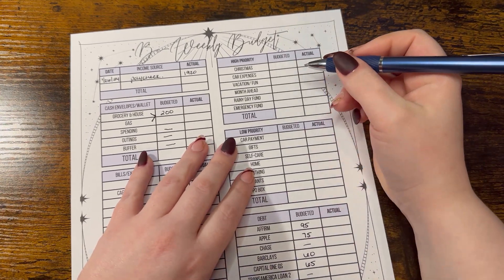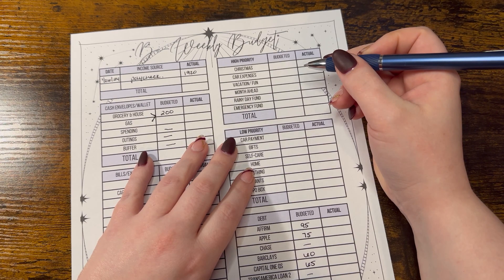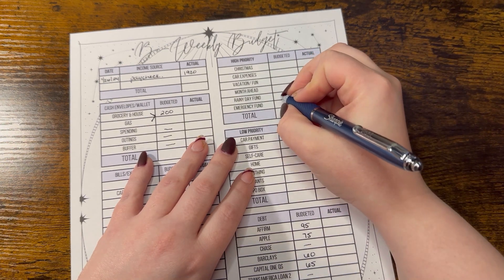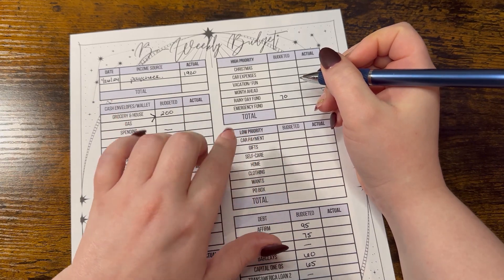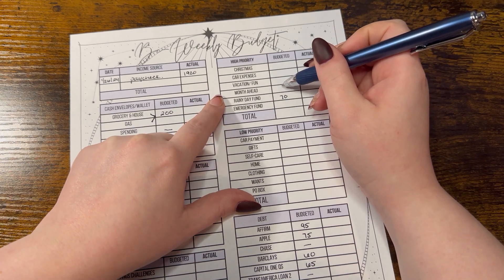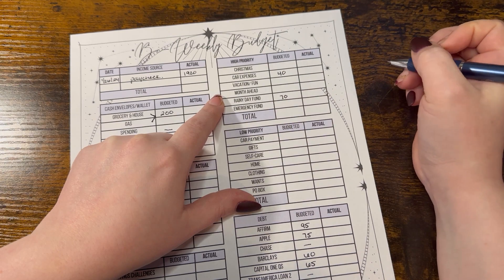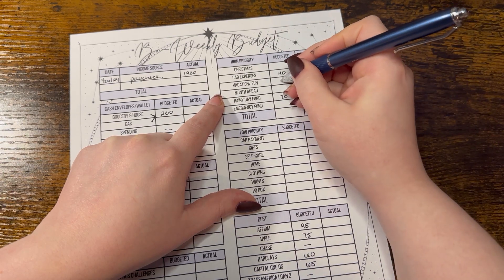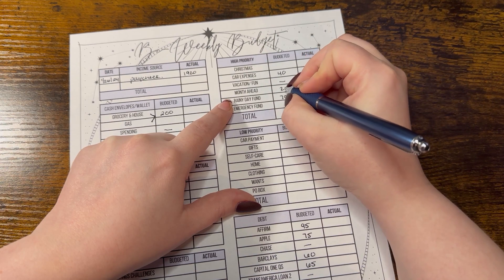Rainy Day Fund gets $70. So I'm paying back what I borrowed from it plus an extra $5. Car expenses is getting its usual $40. Vacation and fun is getting nothing. Month ahead, I want to put $20.